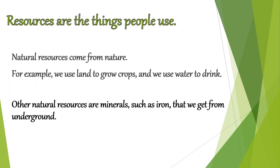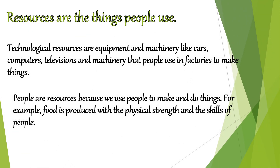Resources are the things people use. Natural resources come from nature — for example, we use land to grow crops and we use water to drink. Other natural resources are minerals such as iron that we get from underground. Technological resources are equipment and machinery like cars, computers, televisions and machinery that people use in factories to make things. People are also resources because we use people to make and do things. For example, food is produced with the physical strength and skills of people.